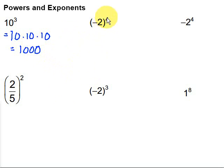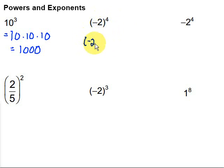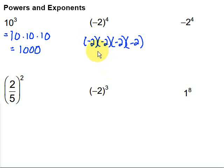Let's take a look at this next one. We have negative two to the fourth power. We have several variations that are very similar, and I wanted to include those to show what's a little bit different for each one. For this one, it's saying we have negative two to the fourth power, so we're multiplying negative two four times: negative two times negative two times negative two times negative two. Negative two times negative two is four, and negative two times negative two is also four. Then four times four is sixteen.